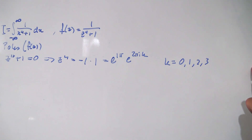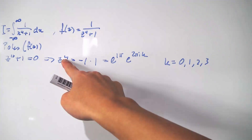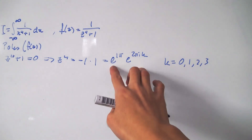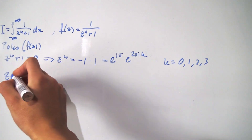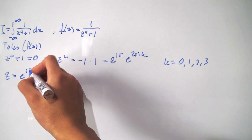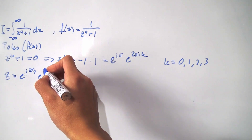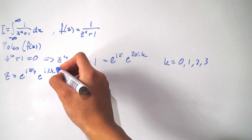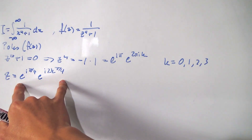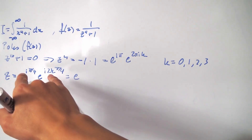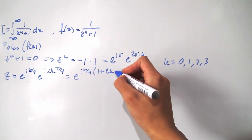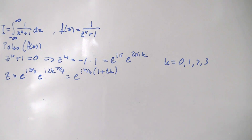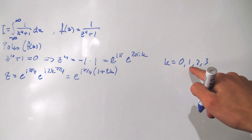The reason we don't go to k=4 and beyond is that once we reach 4, we repeat the roots when we divide the exponents by 4. Dividing both exponents by 4, we get z equals e to the i(π/4)(1+2k). We substitute k = 0, 1, 2, and 3 to find our four poles.